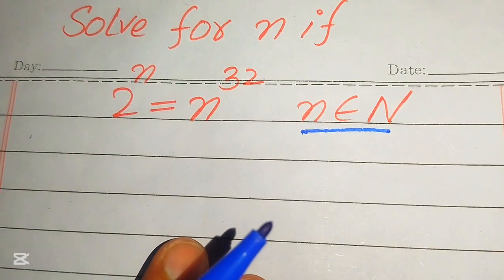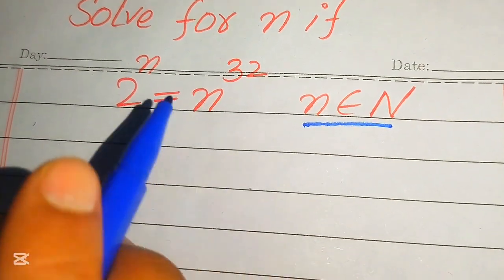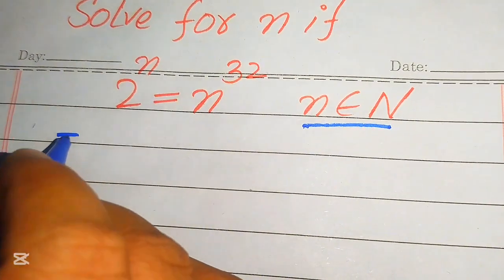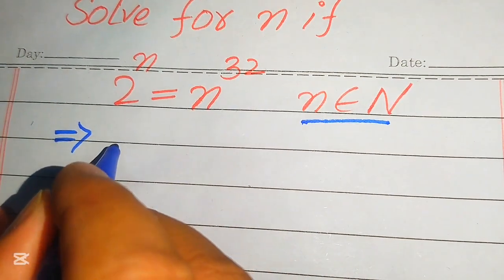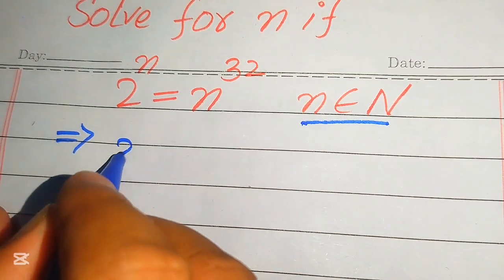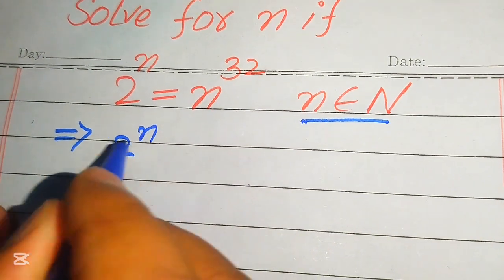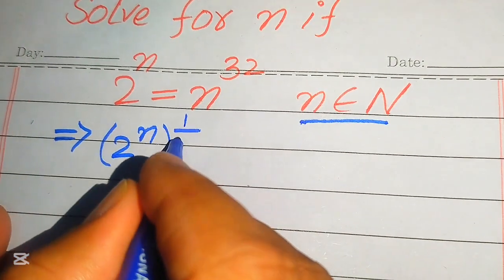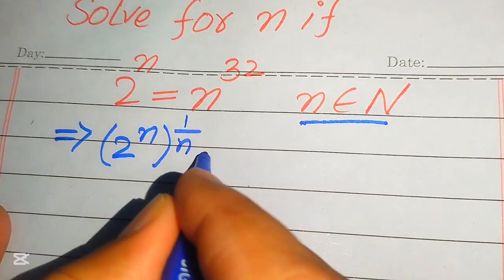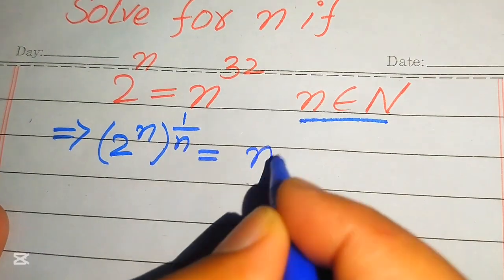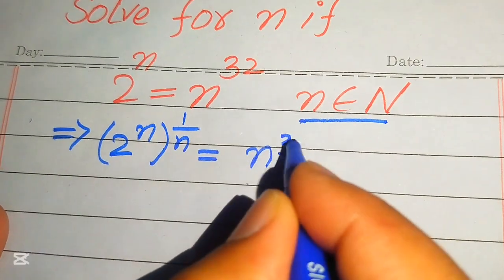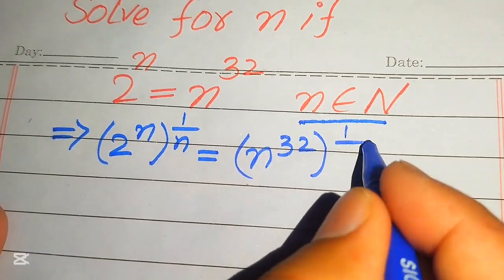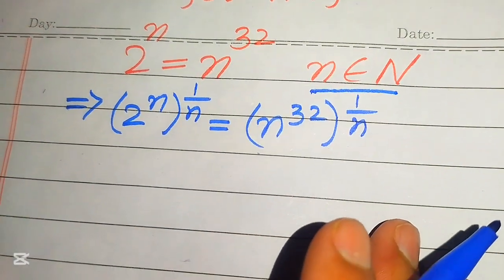The very first step is to move this n to the right hand side. For this we take the nth root on both sides, and when we take the nth root it is written as 2 to the power of n with whole power 1 over n, equals n to the power of 32 with whole power 1 over n.